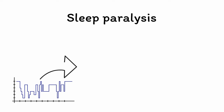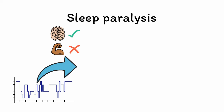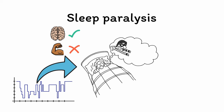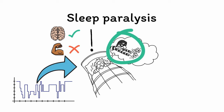Capping off the trio of conditions involving terrifying experiences while asleep is sleep paralysis. Sleep paralysis occurs when someone wakes up from REM sleep and gains consciousness of the world but remains unable to move. This sensation is often accompanied by a feeling of fear or panic. In addition, many people report a distinct sensation of being watched and can even hallucinate a malevolent figure in the room. In this way, we see what happens when the two components of REM sleep — remembering dreams and remaining still — persist even after the patient is woken up.